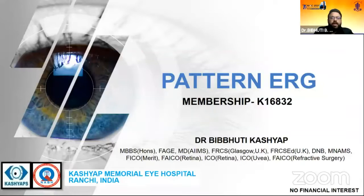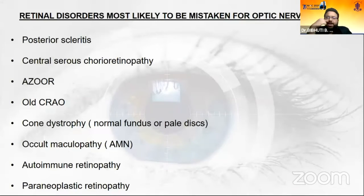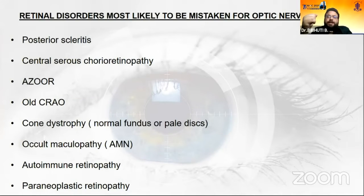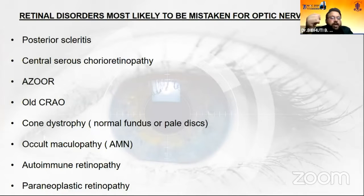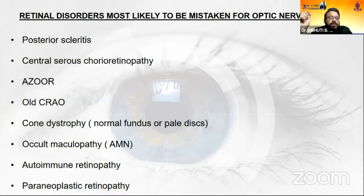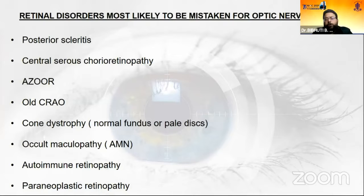In our day-to-day practice, there are some retinal disorders which are most likely to be mistaken for an optic nerve disease — like subtle posterior scleritis, central serous retinopathy, acute zonal occult outer retinopathy, certain old central retinal artery occlusions, cone dystrophies, occult maculopathies, and autoimmune retinopathies.